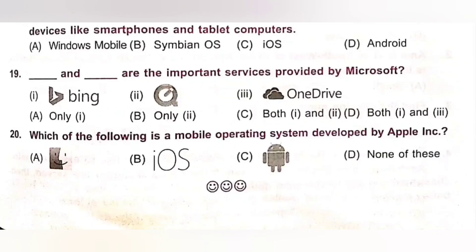Question 20: Which of the following is a mobile operating system developed by Apple? A. Mac OS. B. iOS. C. Android operating system. D. None of these. Mac OS is also developed by Apple, but it is a desktop operating system. iOS is also developed by Apple and it is a mobile operating system. So option B is the correct answer.